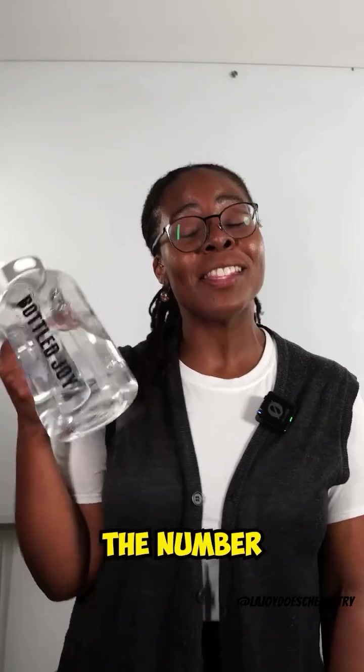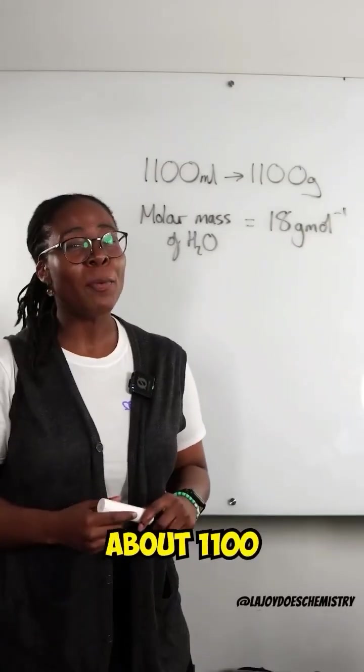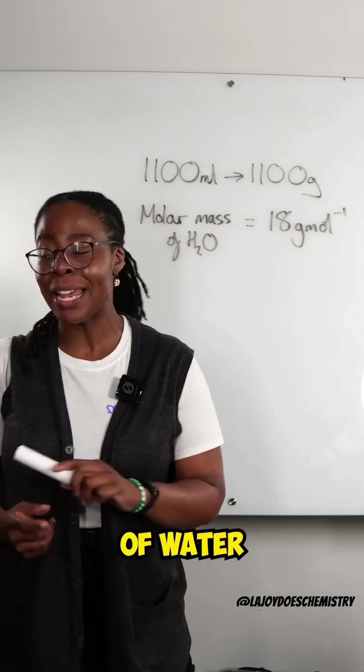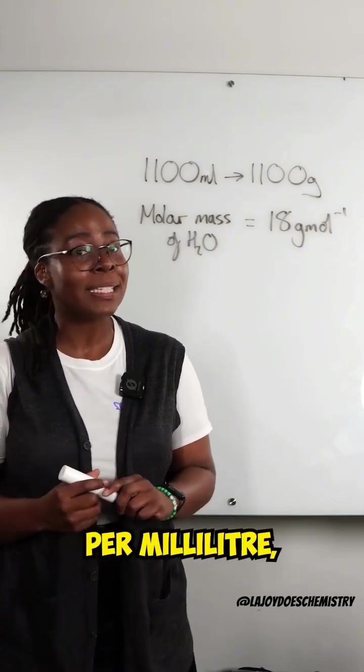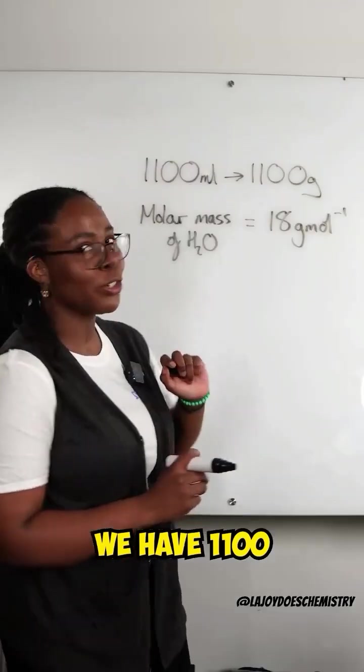So let's calculate the number of water molecules in this bottle. So I have about 1,100 milliliters of water left in my bottle, and due to the density of water, which is one gram per milliliter, we have 1,100 grams.